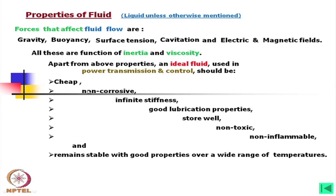The fluid should be non-corrosive. Most components are ferrous material, and we should look into the fact that the oil should not be corrosive — no rust should come over the ferrous components. Infinite stiffness means we wish the fluid should be incompressible and stiff in such a way that it behaves like a solid material while transmitting force.